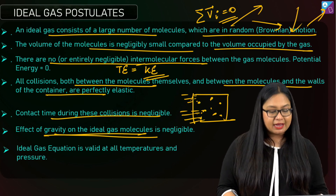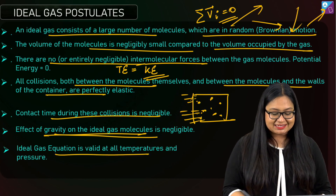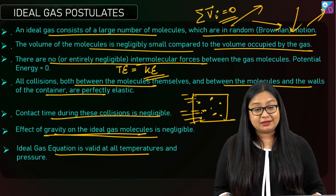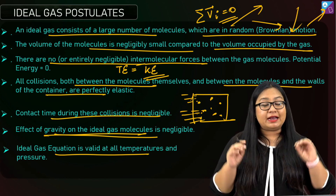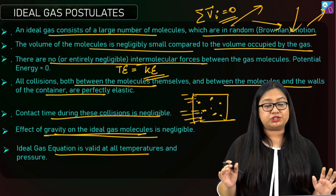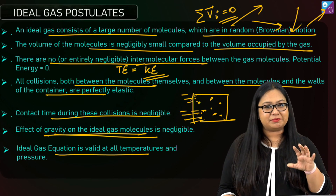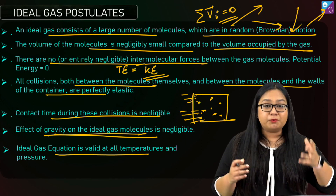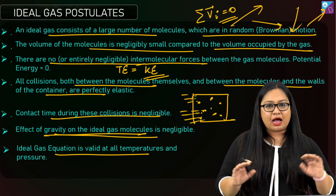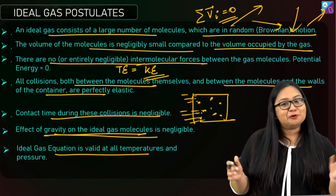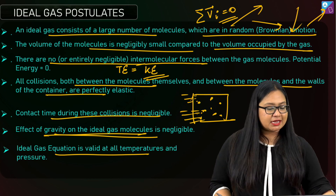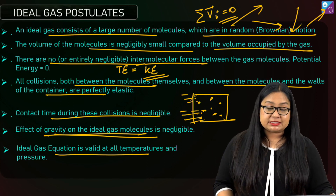Seventh postulate: the ideal gas equation PV = nRT is valid for all temperatures and pressures. Realistically, gas behavior approaches ideal behavior only at very high temperatures. But here, we assume that even at room temperature, if we have a gas, we can apply PV = nRT. These are the seven ideal gas postulates that you need to remember.